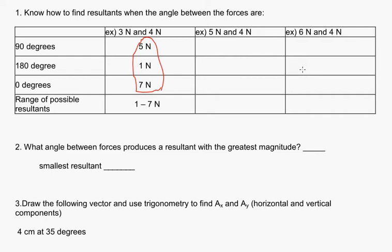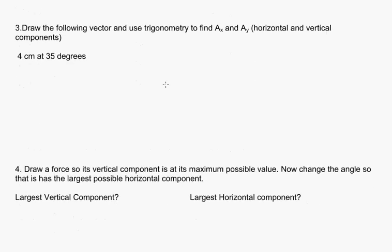So 180 degrees is going to be the subtraction of vectors. It will always give you a very small value. And 0 degrees is basically the scalar addition of vectors, regular addition like you have grown up with. So that one's going to give you the largest possible vector resultant. So let's move on to question 3. Question 3 says draw the following vector and use trigonometry to find Ax, Ay, horizontal and vertical components. And use 4 centimeters at 35 degrees.